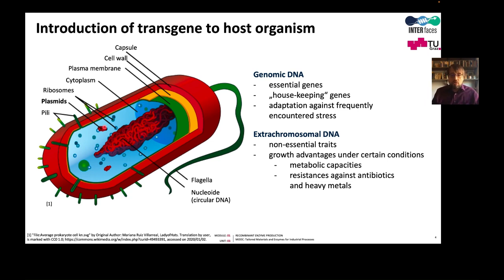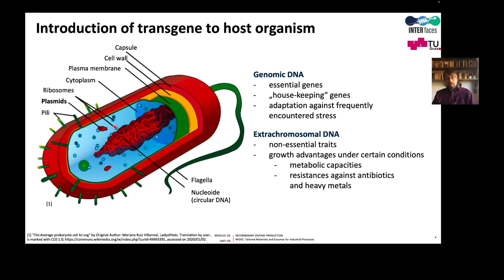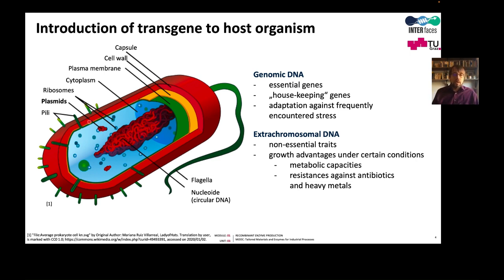Another trait quite often found on plasmids is antibiotic resistance, which we encounter in hospitals. A third trait is special catabolic capacities, for instance the capacity to degrade hydrocarbons. Plasmids are also mobile, meaning they can be quite easily shared with other cells, which is very practical for biotechnology because it is also quite easy to insert a plasmid into a cell.